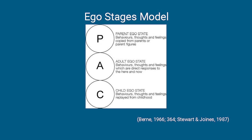The adult ego state is more about a person's feelings, behaviors, and thoughts related to the here and now. They are described as an autonomous set of feelings, attitudes, and behavior patterns which are adapted to the current reality. Lastly, the child ego state is derived from a person's history — a catalog of subjective memory systems which act as a source of regression into early experiences. Berne defines the child ego state as a set of feelings, attitudes, and behaviors which are relics of an individual's own childhood.